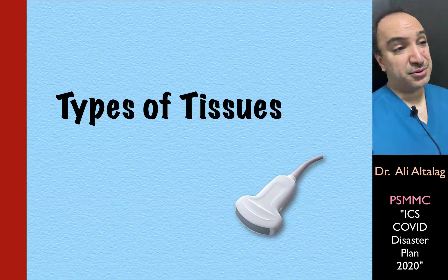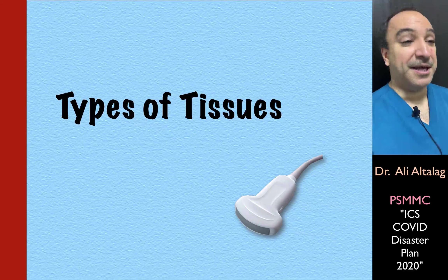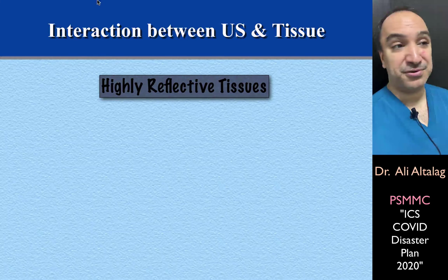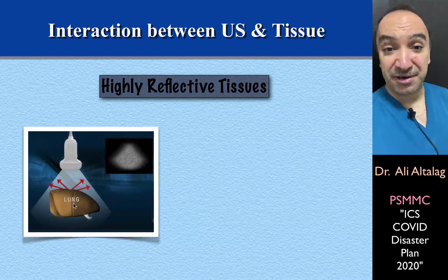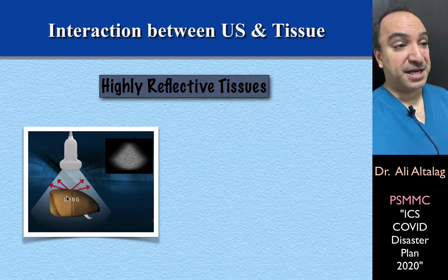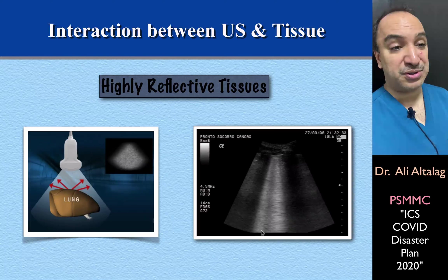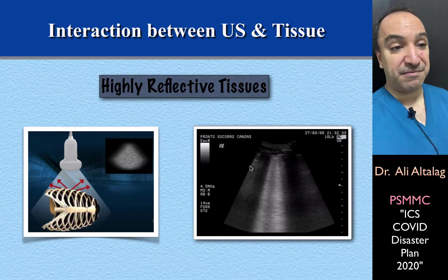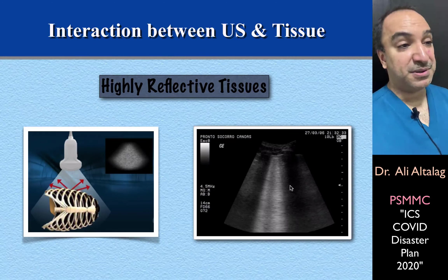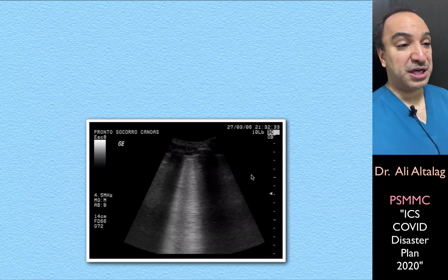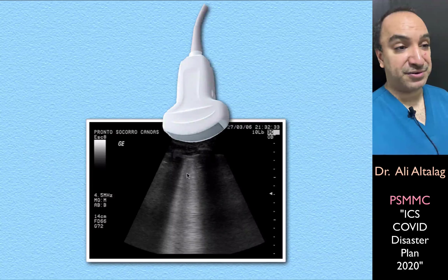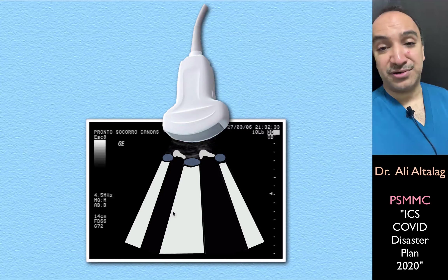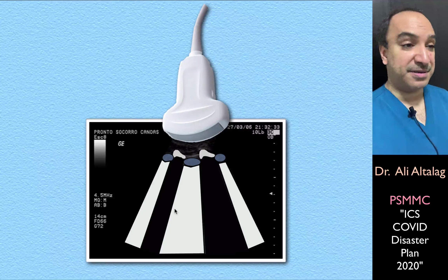Tissues are divided into several types in relation to ultrasonography. We have highly reflective structures or tissues — these could be air, because air is the enemy of ultrasonography, like the air inside the lung. Air produces white artifacts, because it is very highly reflective. We also have ribs that produce black artifacts. Both air and ribs are very highly reflective. This is a chest ultrasonography using a curvilinear array transducer — ribs produce black artifacts, air produces white artifacts.